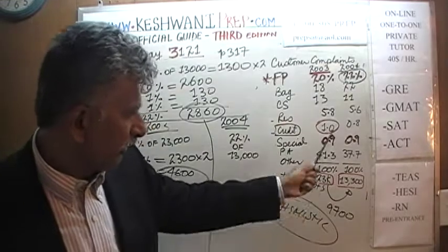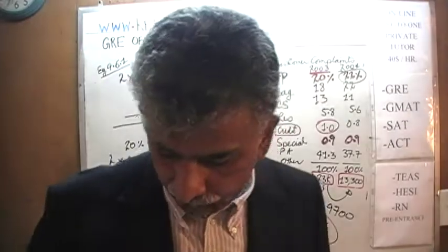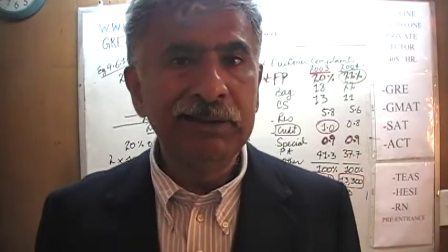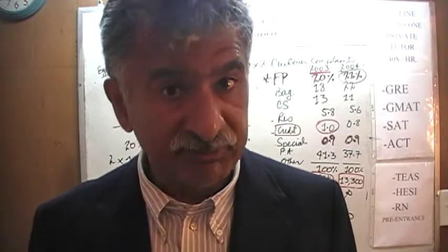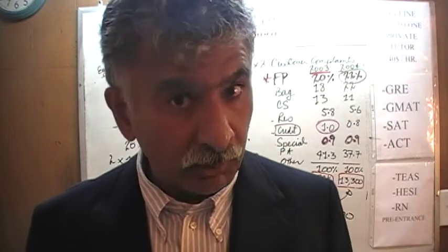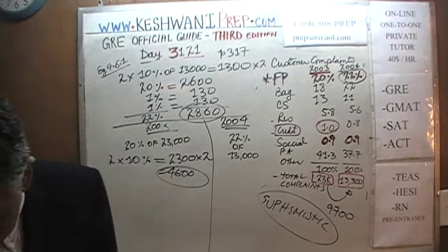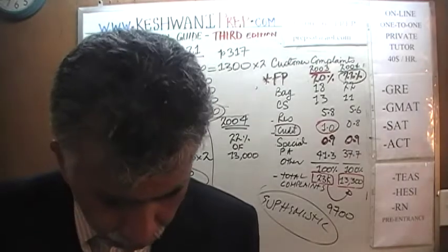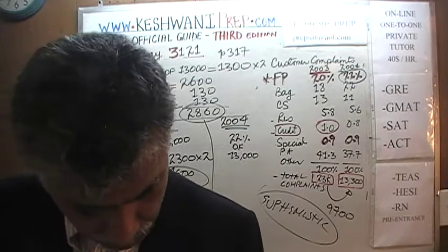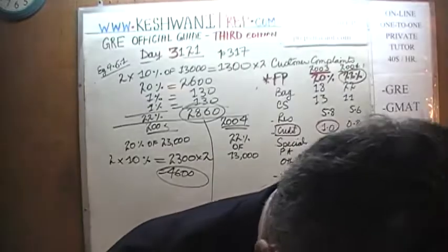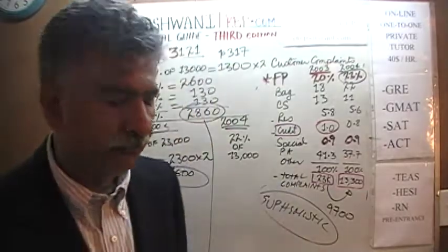All the complaints went down because the airline was doing quite well — total complaints fell by almost 10,000. Either somebody did a great job dealing with the issues, or they were very good at massaging the figures. That was the end of this problem. Tomorrow we'll do the next problem on page 318, dealing with the pie chart. Bye now.